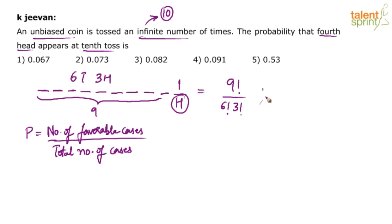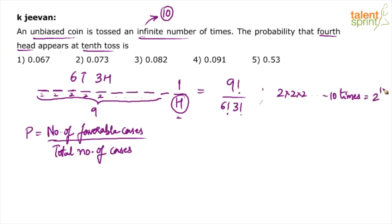What is the total number of cases? Each of the 10 positions can be filled in 2 ways — head or tail. So total number of cases = 2 × 2 × 2 ... 10 times = 2^10 = 1024. Probability = number of favorable cases divided by total cases = [9! / (6! × 3!)] / 2^10.